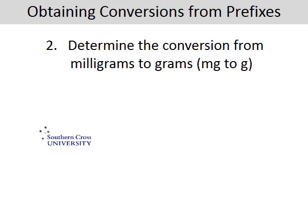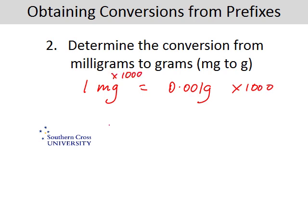The second one is a little bit trickier because the word milli means a thousandth. So one milligram is equal to one thousandth — writing that as a decimal — a thousandth of a gram. So if we times both sides by a thousand, then we'll have a thousand milligrams is equal to one gram.